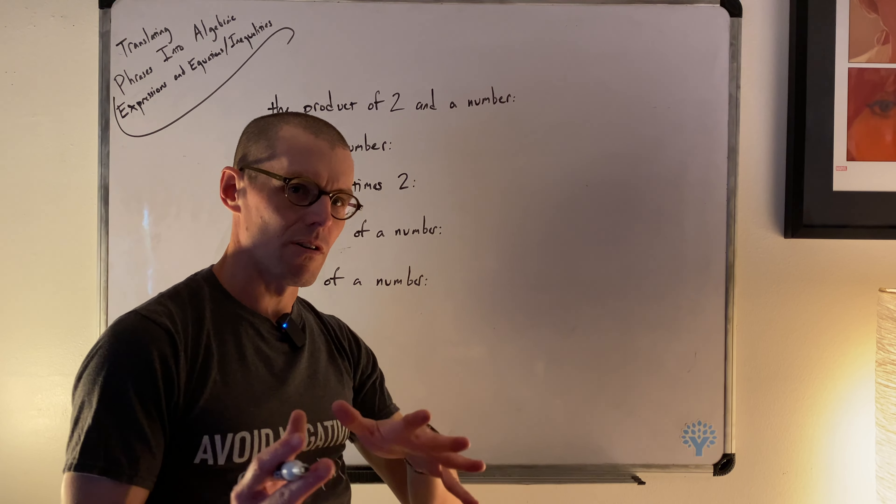That covers the four main operations and how we encode expressions. In the last part of this video, we put all that together into the bigger frame of equations and inequalities. Now we have new sentences, and each is going to be a full equation or inequality. Let's start slow. Our first sentence: 'the sum of two and a number is six.'